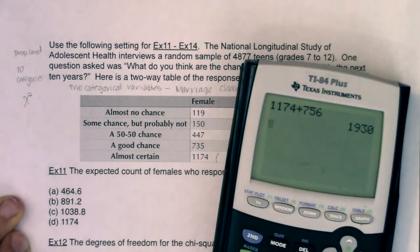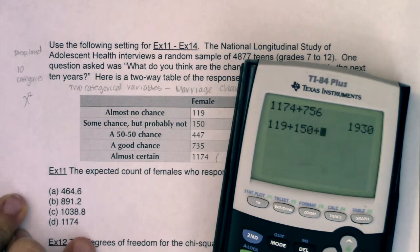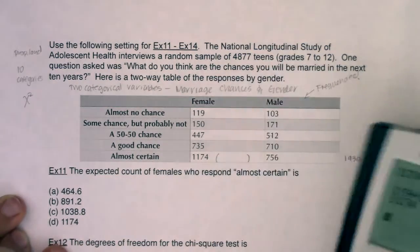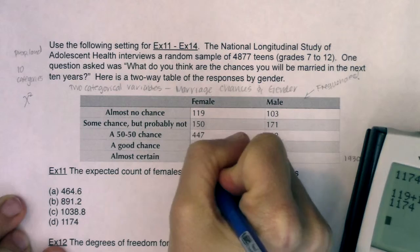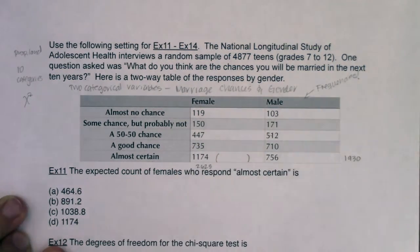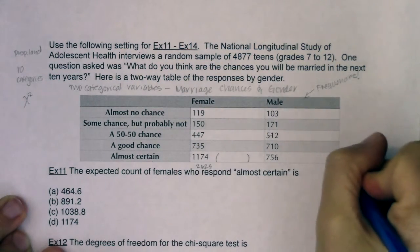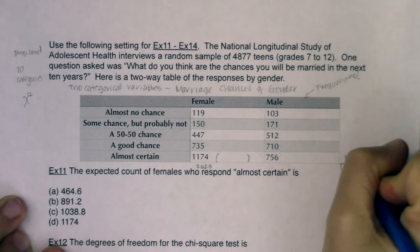If I take 1174 and I add to it 756, I'm looking at 1930 over here. And if I add the numbers in the column, we've got 119, 150, 447, 735, 1174, it looks like I've got 2625 over here. And they told me that the grand total was 4877.